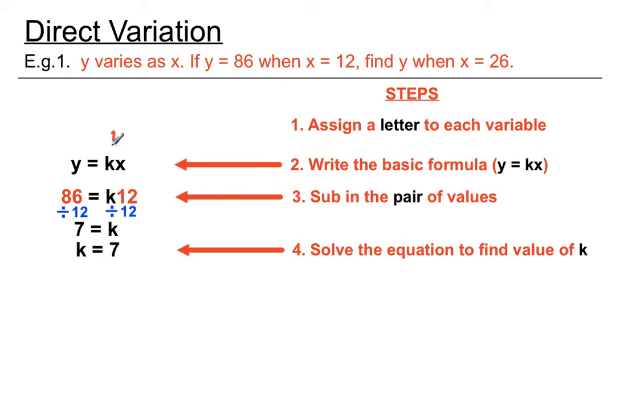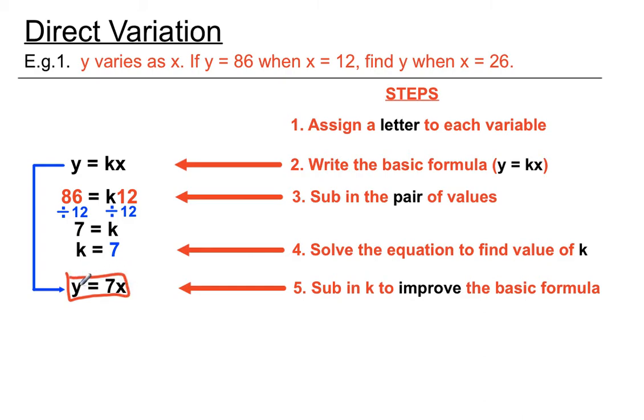We've cracked the code for what the relationship number, that constant of variation, we've sorted out what that value is by having a look at the first pair of values. Now what we're going to do is sub in K to the original basic formula to improve it. If we know what K is up here, if we know that's a certain number, it will improve the information we have by putting that number in instead of the K. Instead of the K, we're going to put that 7. So we've got Y equaling 7 times whatever X is. Once we've got this version of the basic formula happening, we can sub in any value for X and be able to figure out Y, or even able to sub in any value of Y and work backwards to find what X is.